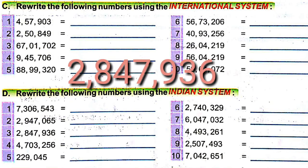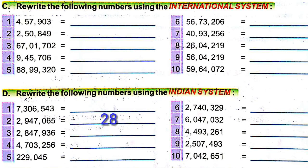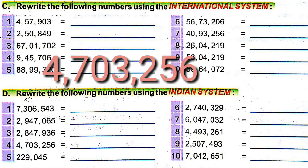The next number is 2,847,936. Here also seven digits. We have to give a comma before three and five digits, that is between 8 and 4, and between 7 and 9. So the number is 28,47,936.